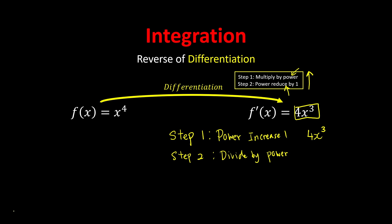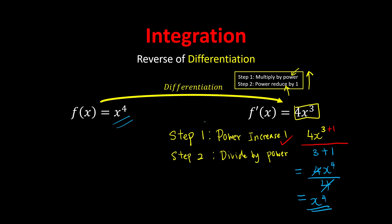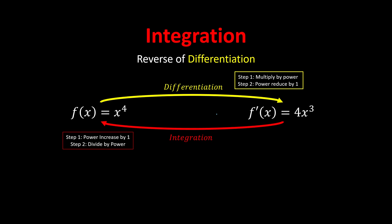So for 4x to the power of 3, the power is going to increase by one — we add one, completing step one. Step two: divide by the power. The power is now 3 plus 1, so we divide by 3 plus 1. Computing this gives 4x to the power of 4 over 4. Simplifying, we're left with x to the power of 4, which is indeed the original equation. Congratulations — you've learned how to do integration!